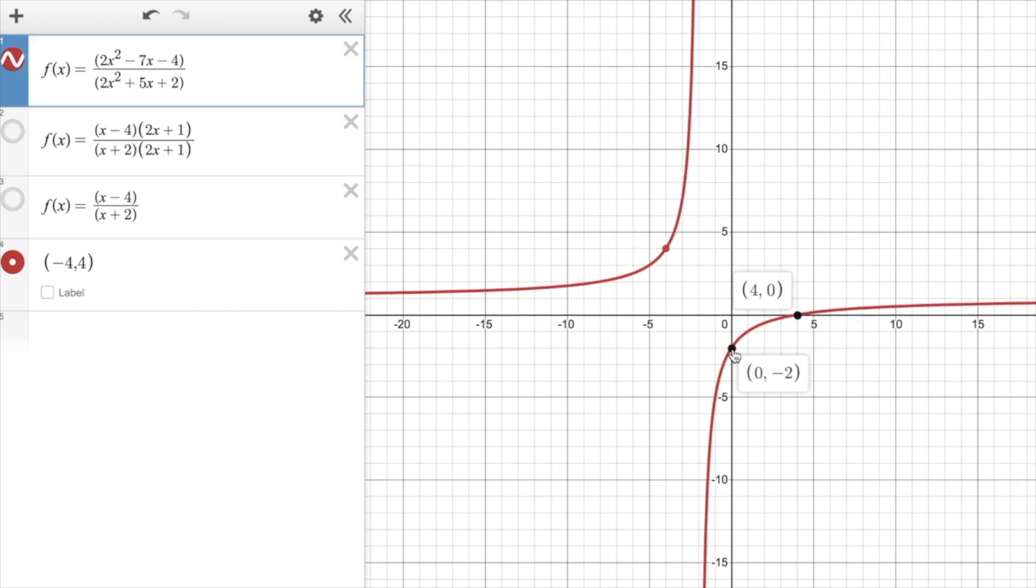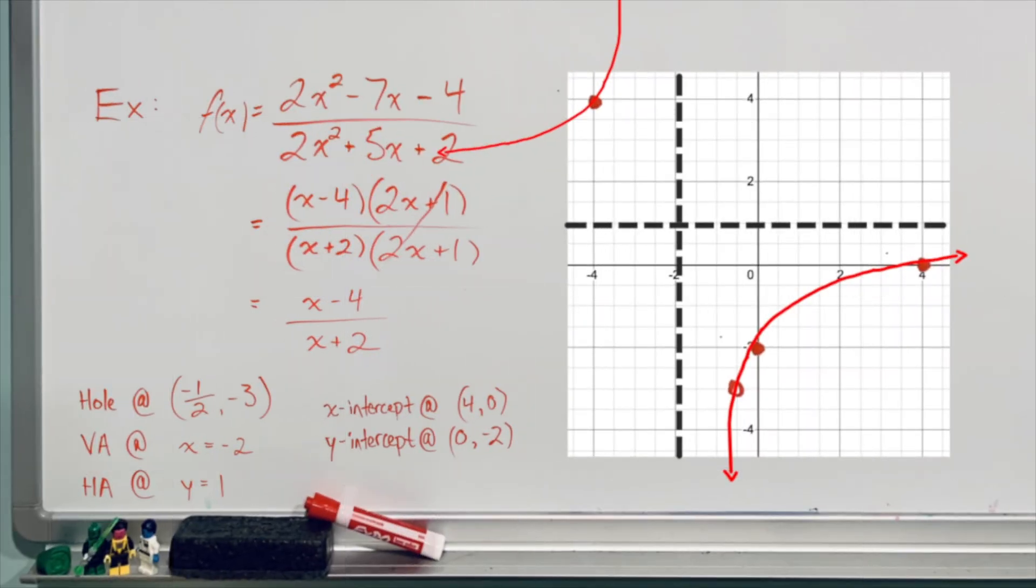And of course our x-intercept is at 4, 0, our y-intercept is at 0, negative 2. And if I approach negative 1 half, what you're going to see is that the graphing calculator tells me my function is undefined there. And that should make sense, because what I'm looking at is the original function, and I know that there's a hole at x equals negative 1 half, as that's what turned up in my analysis. So there you have it, an analysis and a walkthrough of how to sketch a more complex rational function with a hole, vertical asymptote, horizontal asymptote, and the x and y-intercepts.